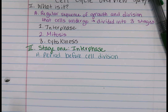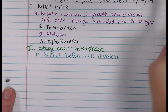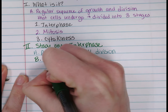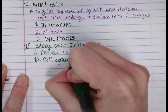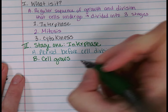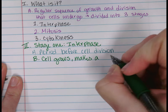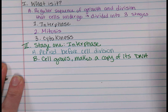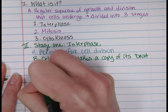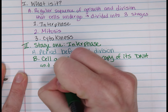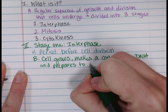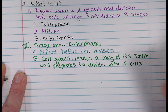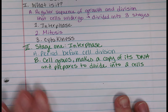About 90% of a cell's life is going to be spent in interphase. So in this section, big letter B: the cell grows to about double its size, makes a copy of its DNA, and prepares to divide into two cells. That's pretty much interphase as a whole.